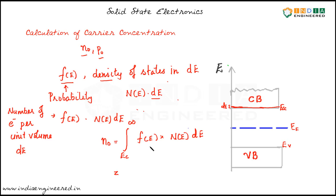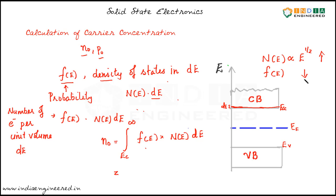Before doing this integration, let's look at the properties of F(E). The density of states N(E) is proportional to E^(1/2), so N(E) increases with energy. But the probability F(E) decreases rapidly as we look at higher energy levels in the conduction band — it almost dies out at higher energy levels. So we have one quantity increasing and another decreasing, and their product decreases rapidly as energy increases.